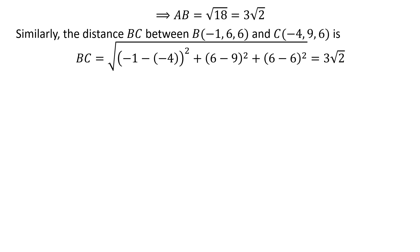Similarly, the distance BC is equal to square root of (-1 - (-4))² plus (6 - 9)² plus (6 - 6)² which is equal to 3 times square root of 2.